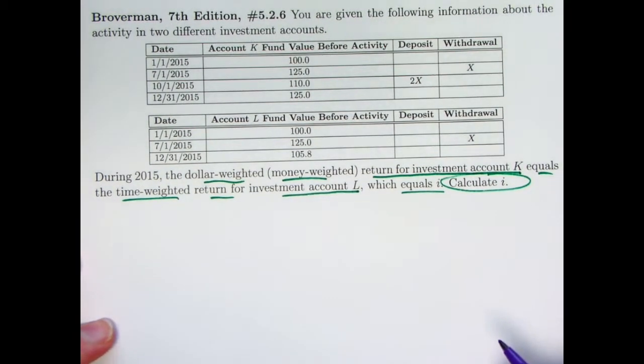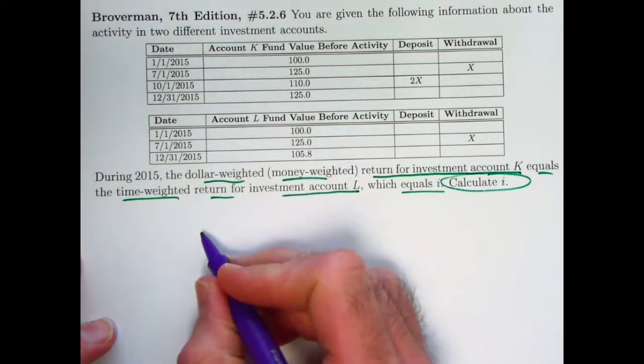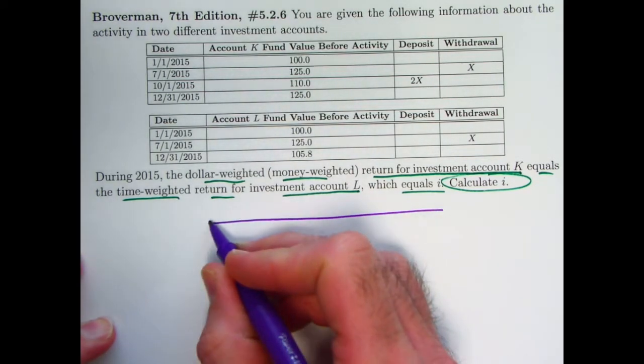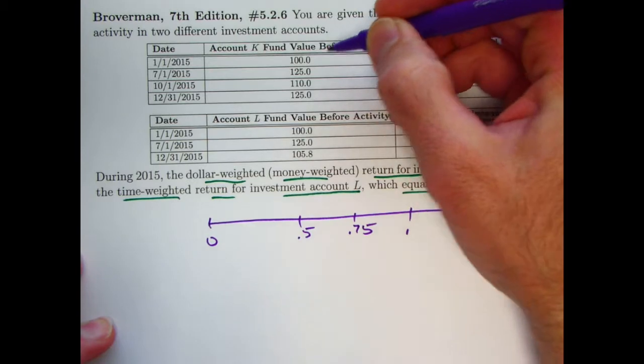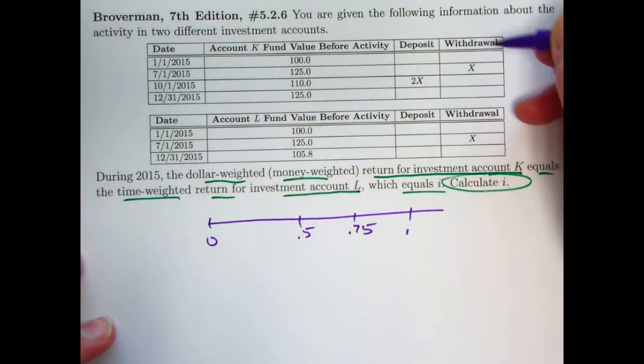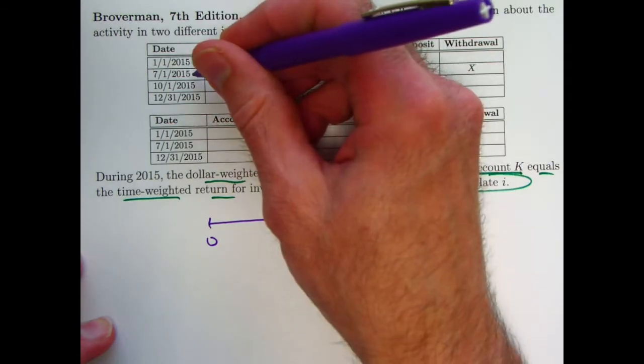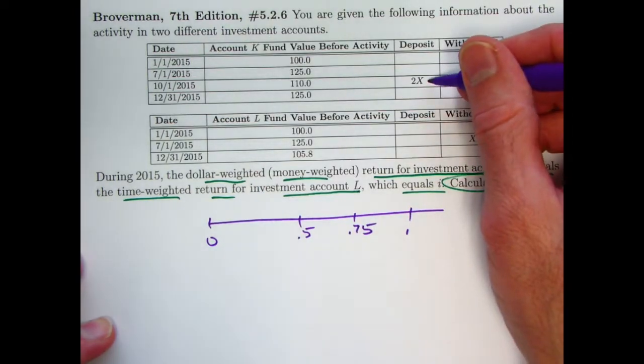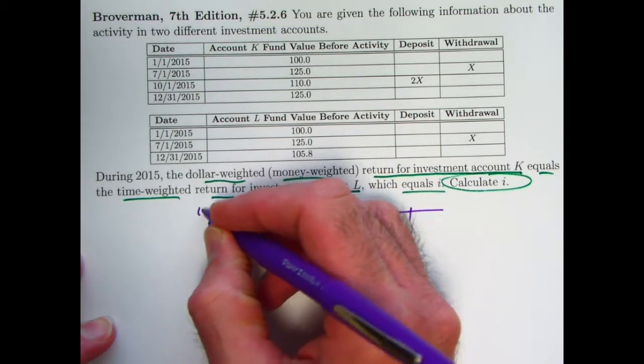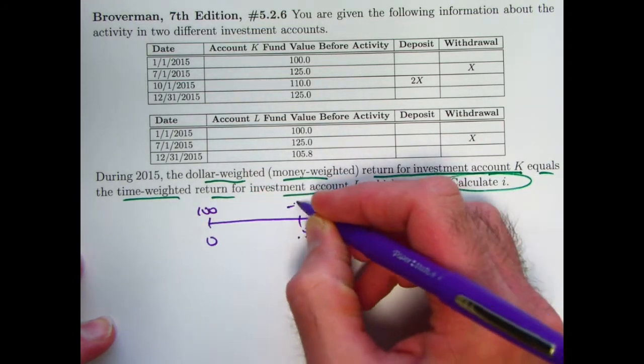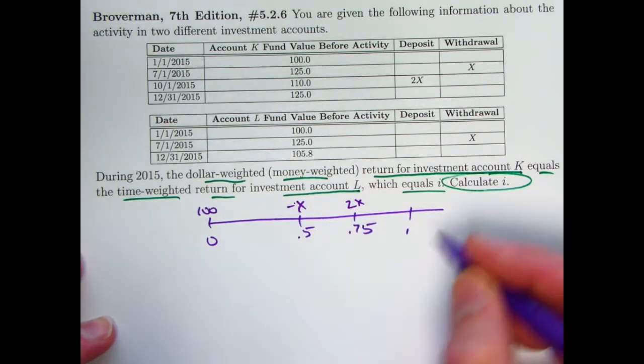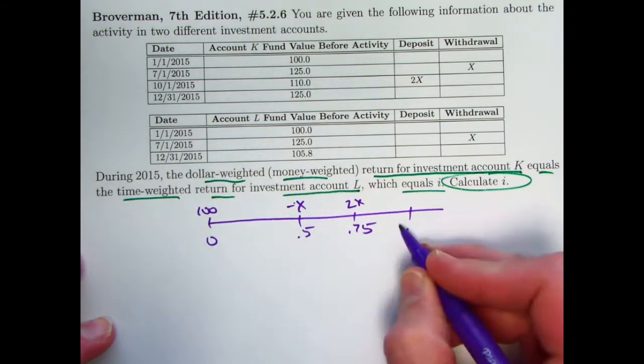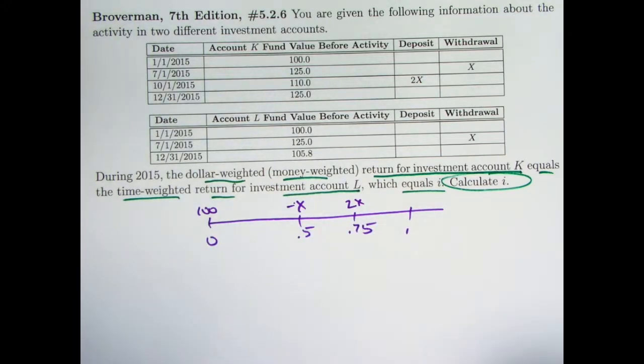For account K, it's worthwhile to make a timeline of the deposits and withdrawals. Time 0, time 0.5, time 0.75, and time 1. You've got the deposit at time 0 of 100. A withdrawal of x at time 1 half, halfway through the year. A deposit of 2x at time 0.75. So I'll put 100, negative x (it's a withdrawal), and 2x. That helps you see how much time those are in the account. A full year for the first one, half a year for this one, and one-fourth of a year for the last one. So our equation of value for a dollar-weighted rate of return based on using simple interest would be that 100 times 1 plus i minus x times 1 plus 0.5i plus 2x times 1 plus 0.25i equals the final balance of 125 at time 1.